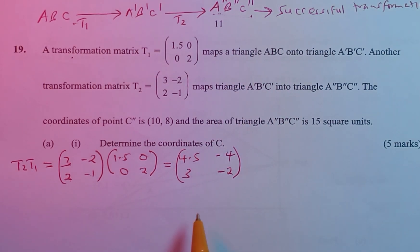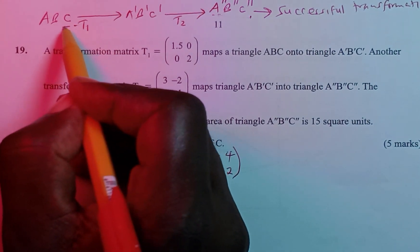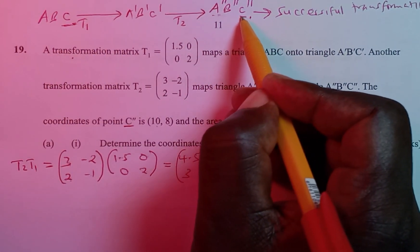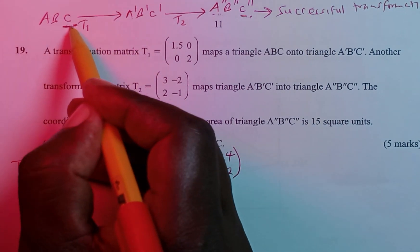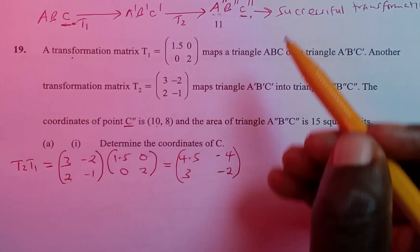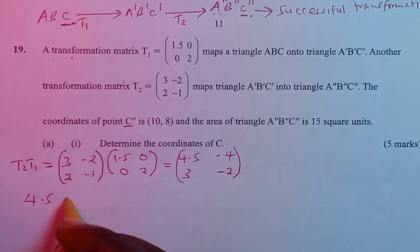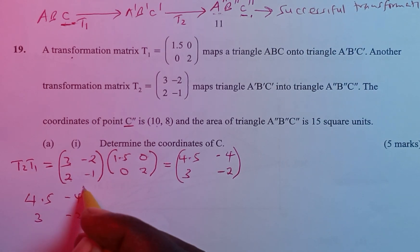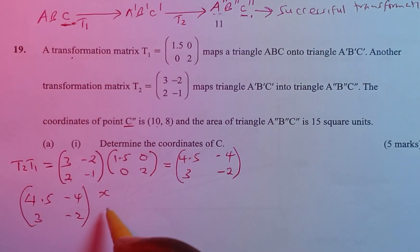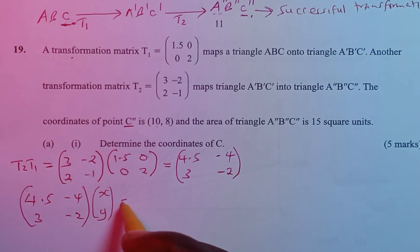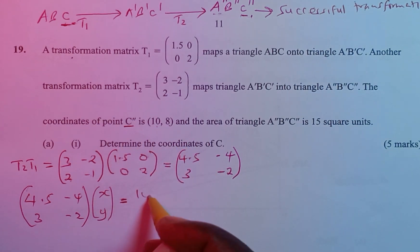We have been told that C'' is (10, 8), meaning C has been mapped directly onto C'' using the combined matrix. So we take the single transformation matrix (4.5, −4, 3, −2) and multiply by the coordinates of C, which we call (x, y) as a column vector. This gives us the image coordinates (10, 8).